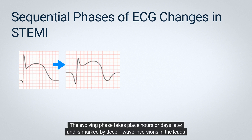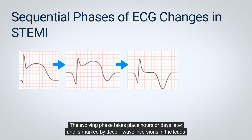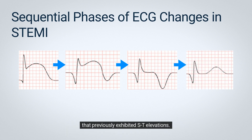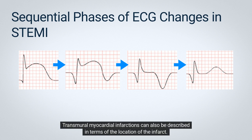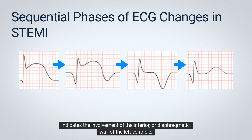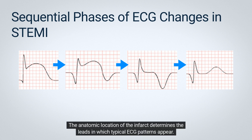The evolving phase takes place hours or days later and is marked by deep T-wave inversions in the leads that previously exhibited ST elevations. Transmural myocardial infarctions can also be described in terms of the location of the infarct. Anterior refers to the involvement of the anterior or lateral wall of the left ventricle, whereas inferior indicates the involvement of the inferior or diaphragmatic wall of the left ventricle. The anatomic location of the infarct determines the leads in which typical ECG patterns appear.